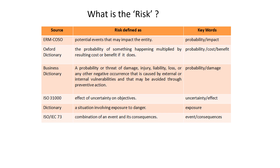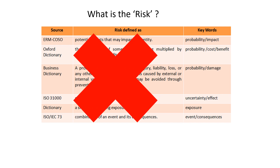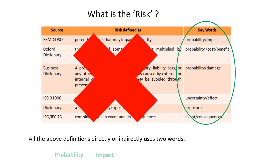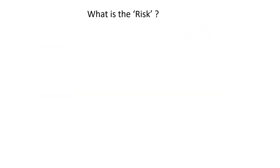For exam purposes, we need not worry about any of those definitions. All the above definitions directly or indirectly use two words: probability and impact. So for us, risk is probability and impact. In simple language, risk is the product of probability and impact.